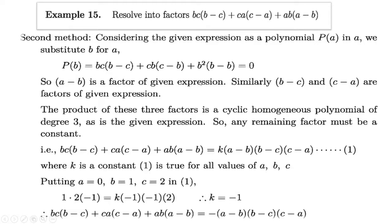Placing b in place of a, we get p(b) equal to zero. Therefore (a − b) is a factor of the given expression. From Rule 1, if (a − b) is a factor of the cyclic polynomial, then the other two factors will be (b − c) and (c − a). Therefore we write this equal to k(a − b)(b − c)(c − a), where k is a constant. Mark this as equation 1. Equation 1 is true for all values of a, b, c.